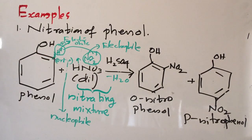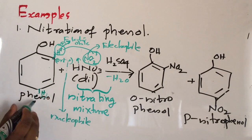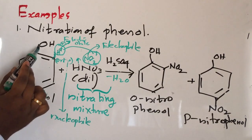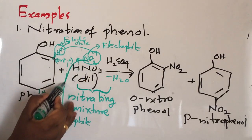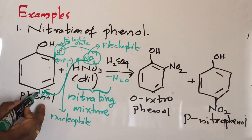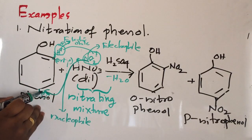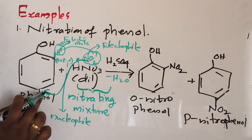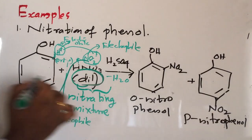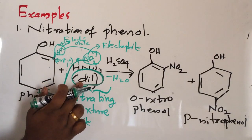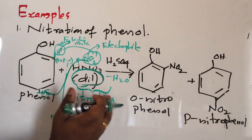Substitution can also take place at the para position, because due to resonance, para position also has high electron density. So NO2+ can easily come to the para position and we will get para-nitrophenol. If we are using dilute HNO3, these are the products. If we are using concentrated HNO3 instead of dilute, the product will change — I will teach you about that later.